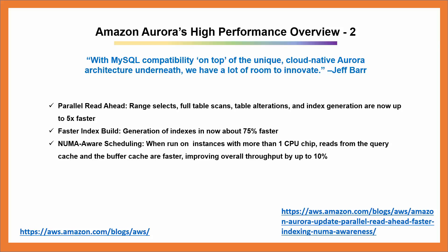The third feature is NUMA-aware scheduling. When Amazon Aurora runs on instances with more than one CPU chip, reads from the query cache and the buffer cache are faster, improving overall throughput by up to 10%. The largest DB instance, db.r3.8xlarge, has two CPU chips and a feature known as NUMA — Non-Uniform Memory Access. Aurora now has improved scheduling of threads across CPUs to take advantage of disparity in access times, no longer needing to fight for access to the less efficient memory attached to the other CPU.